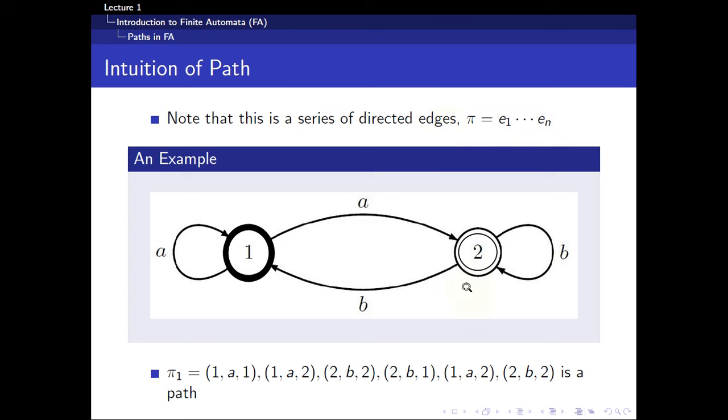For example, we use the same example we worked out earlier. π1, the path 1 will consist of 1, 2, 3, 4, 5, 6 transitions. It starts with 1A1. So you take this path 1A1. 1A2: you start from 1, go through A, reach 2. 2B2, 2B1, 1A2 and 2B2. So this is known as a path within a finite automaton.